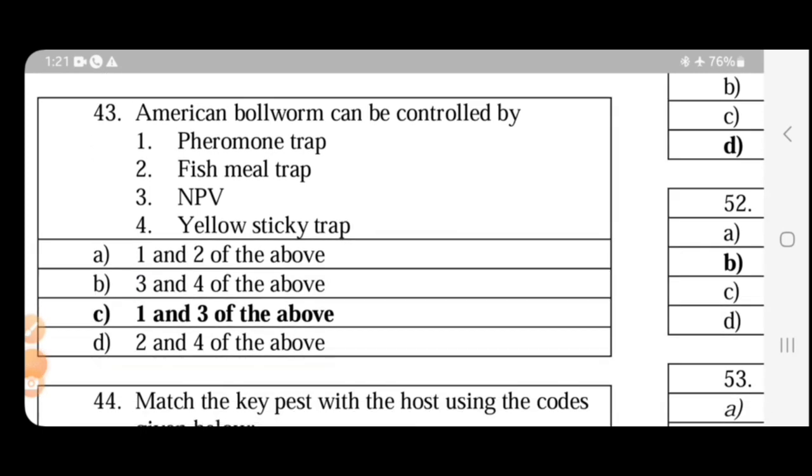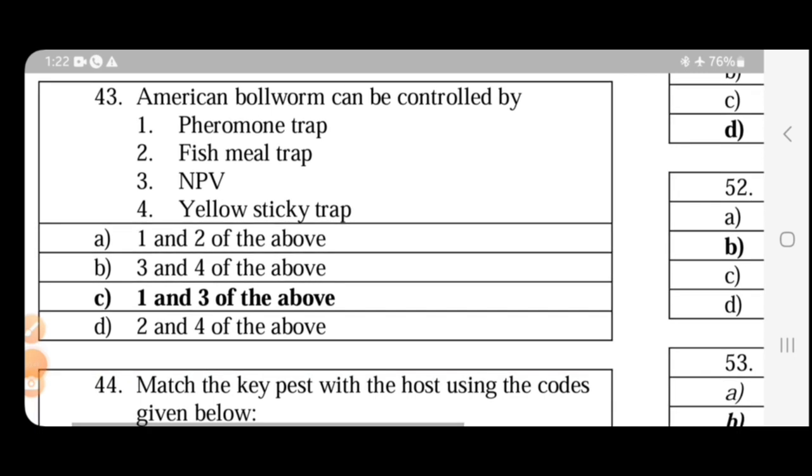American bollworm can be controlled by what? You can see options like pheromone trap, fish meal trap, NPV that is nuclear polyhedrosis virus, and elastic trap. In this case, pheromone trap and NPV. The pheromone trap is a mechanical method and NPV is a biological method. If you use it, you can use egg larval parasitoid, pheromone, blacklight trap, and predators are used.